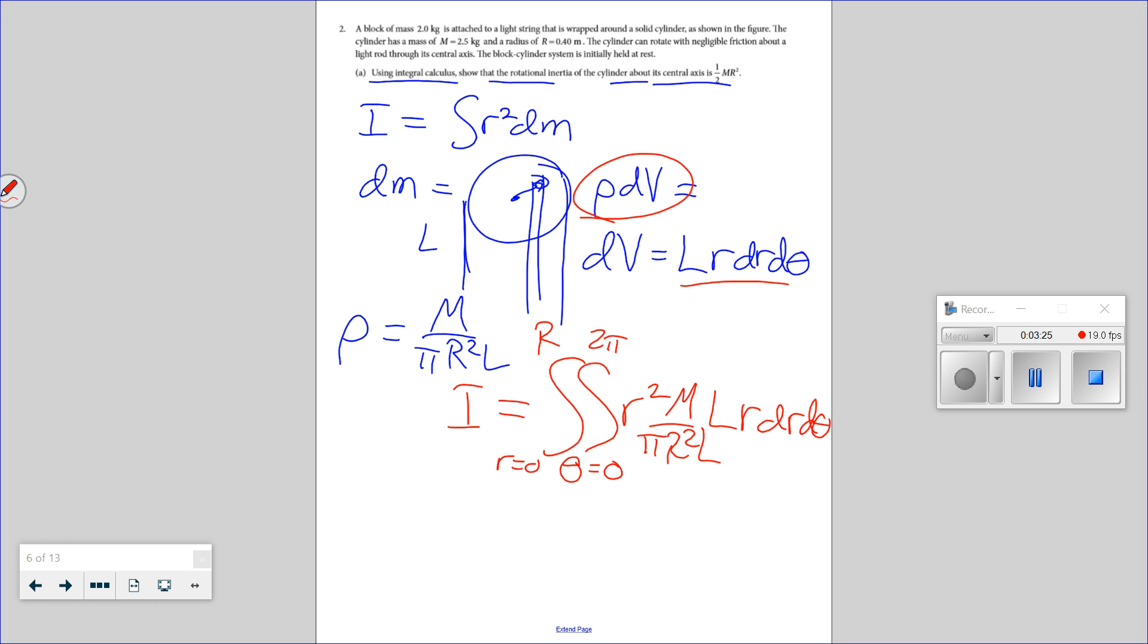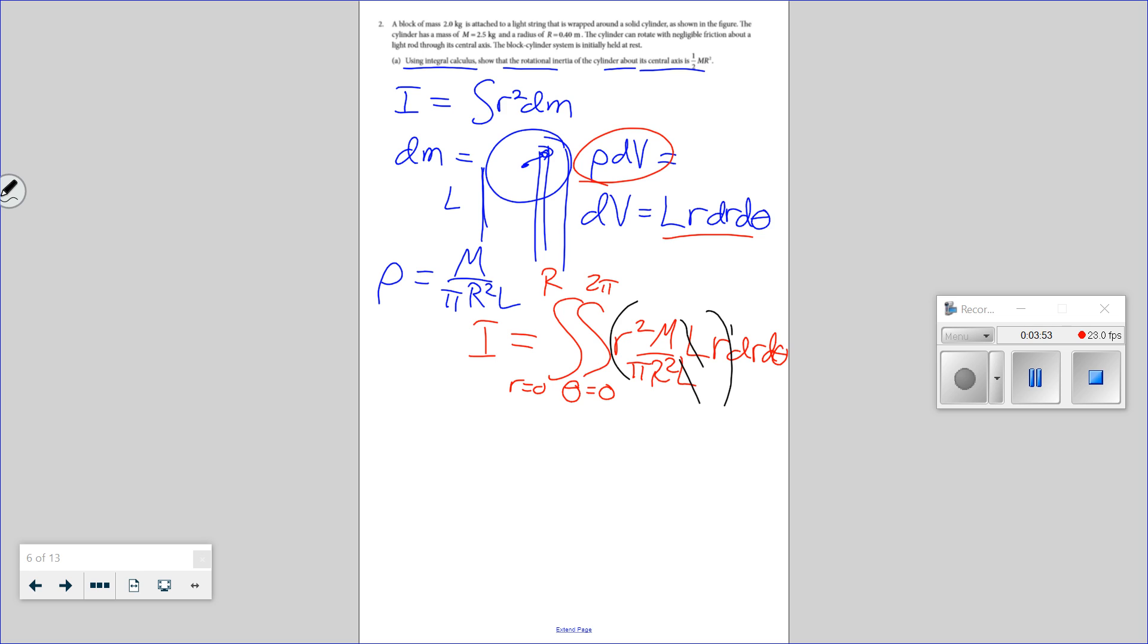So then I write these squiggly symbols. If you know some calculus, I'm doing the integral. I'm going to take theta from 0 to 2 pi. We're going to go all the way around. And we're going to take R from 0 to big R, and we do R squared times dm, which was rho dv. So I just multiply all this stuff, big M over pi R squared L. Times dv, times big L, times little r, times dr, d theta.